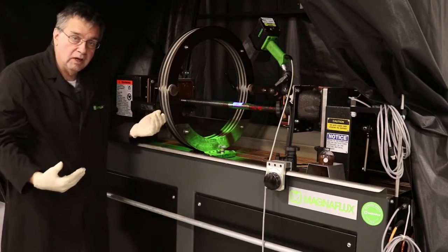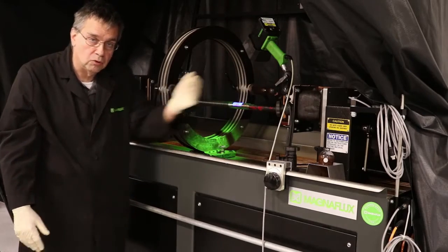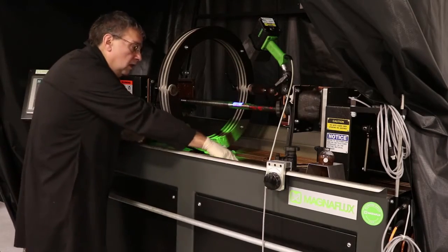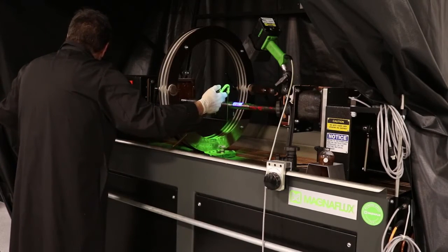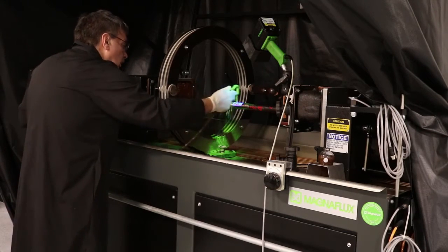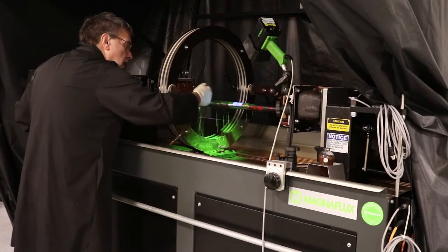So if you have a part over 20 inches long, you need to move the coil and perform a second, third, or multiple shots until you have coverage. The technique is still the same. Wet the part and apply the current just prior to stopping or as you stop the bath flow.